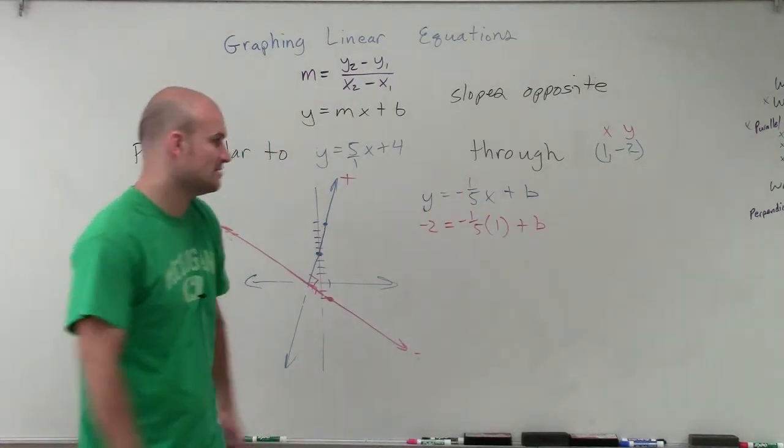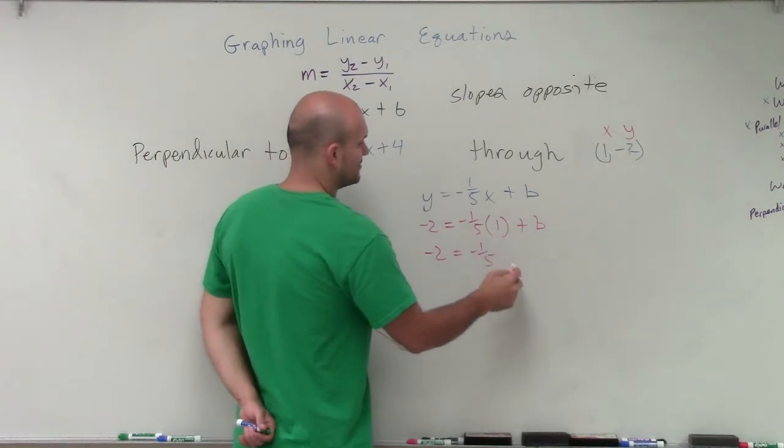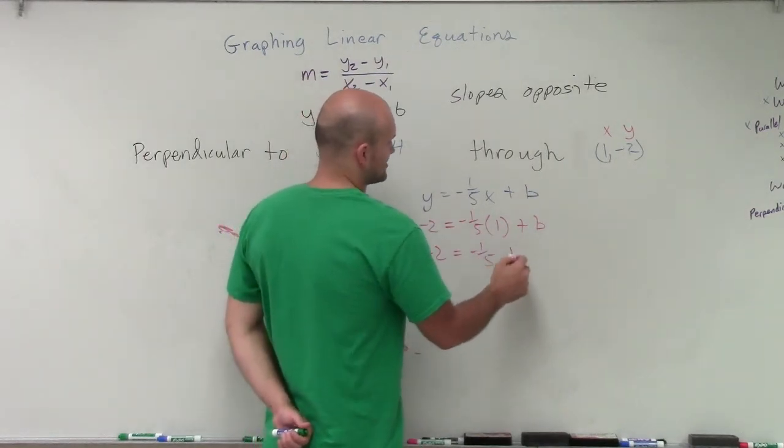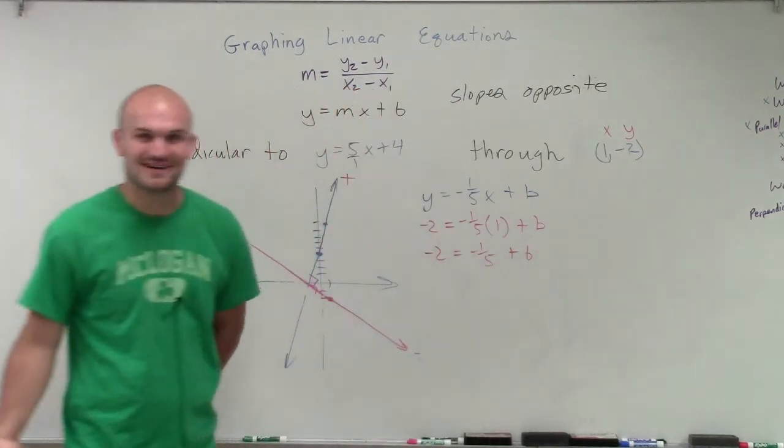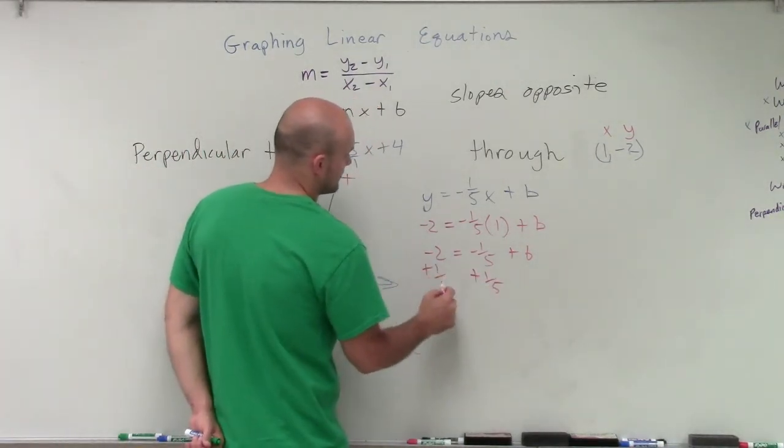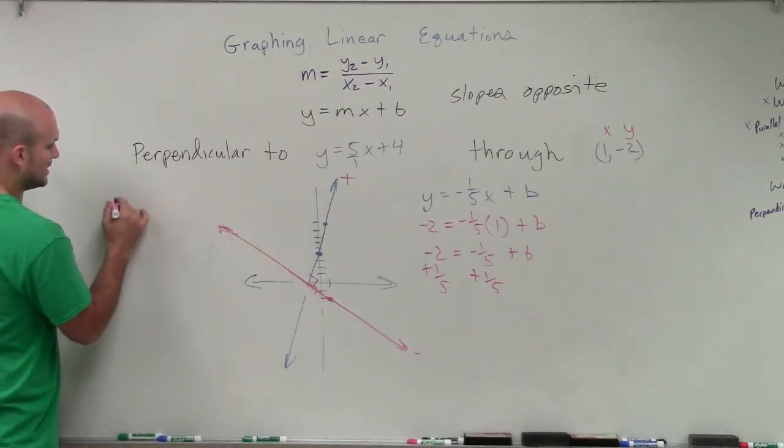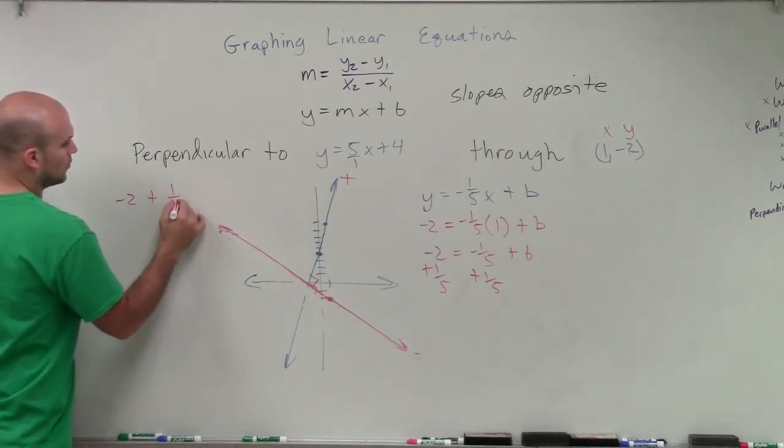Now, negative 1 fifth times 1 is going to be a negative 1 fifth. And then you're looking, you're like, oh shoot, here we go, here comes the fractions. And yes, you're right, we're going to have some fractions, but that's OK. So we'll add 1 fifth to both sides. All right, so I'll do a little extra work over here. So I have negative 2 plus 1 fifth.